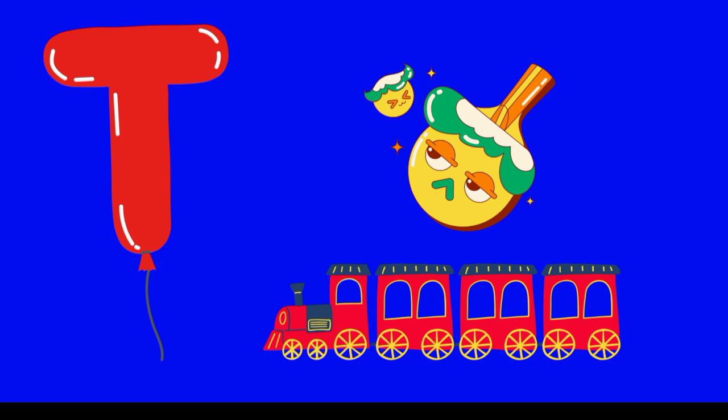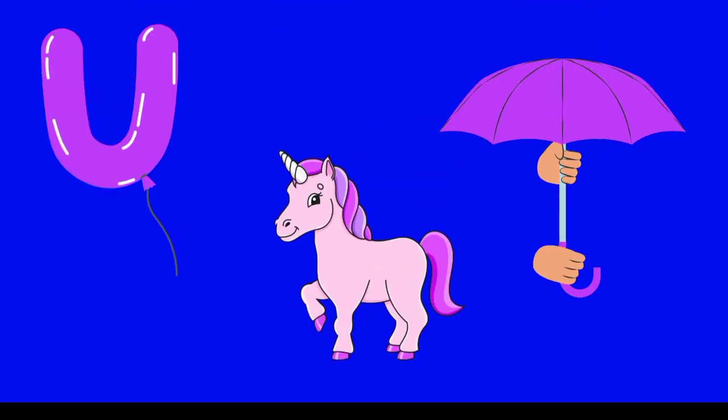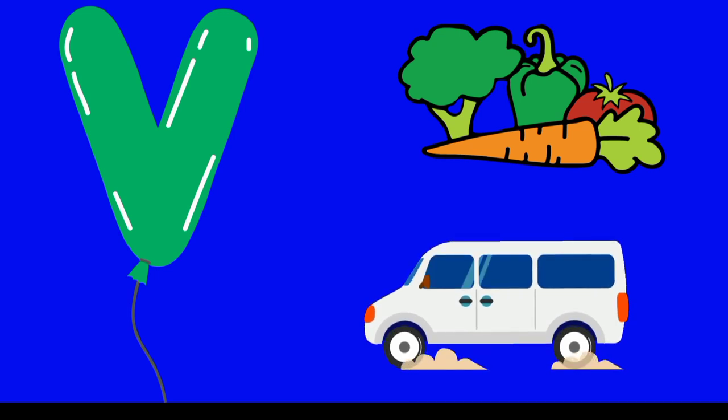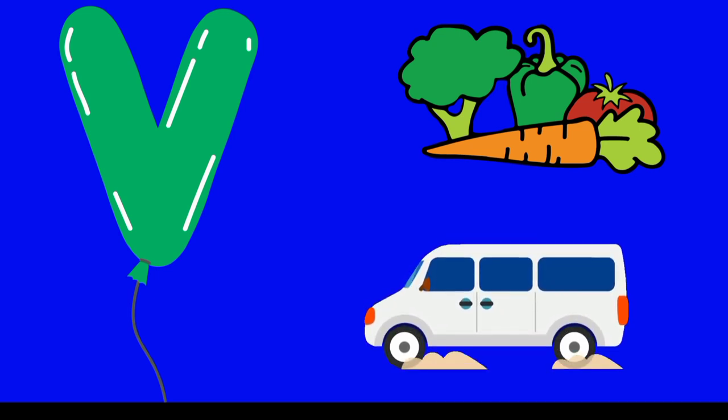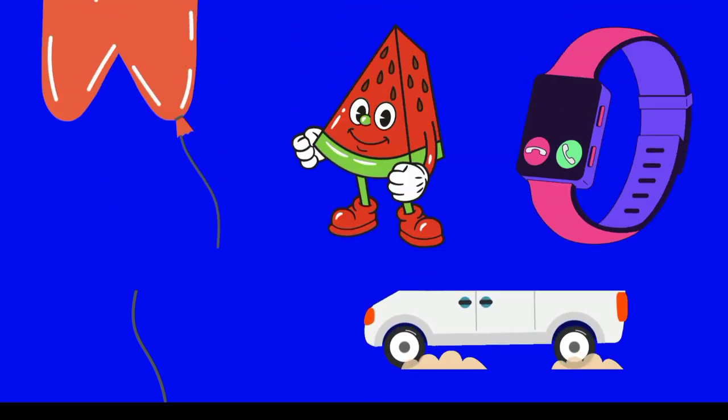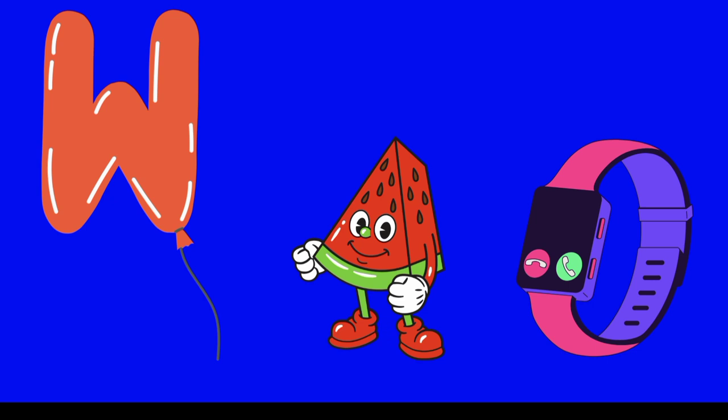T is for toy and T is for train. U is for unicorn and U is for umbrella. V is for vanilla, V is for van and V is for vegetable. W is for watermelon and W is for watch.